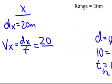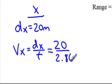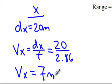Now let's come back to my x. Remember, in the x we use the full range, so we're going to use the full time. We're going to have 20 meters for the dx over the full time of 2.86 seconds. Dividing these two gives me my velocity in x, which is approximately 7 meters per second.